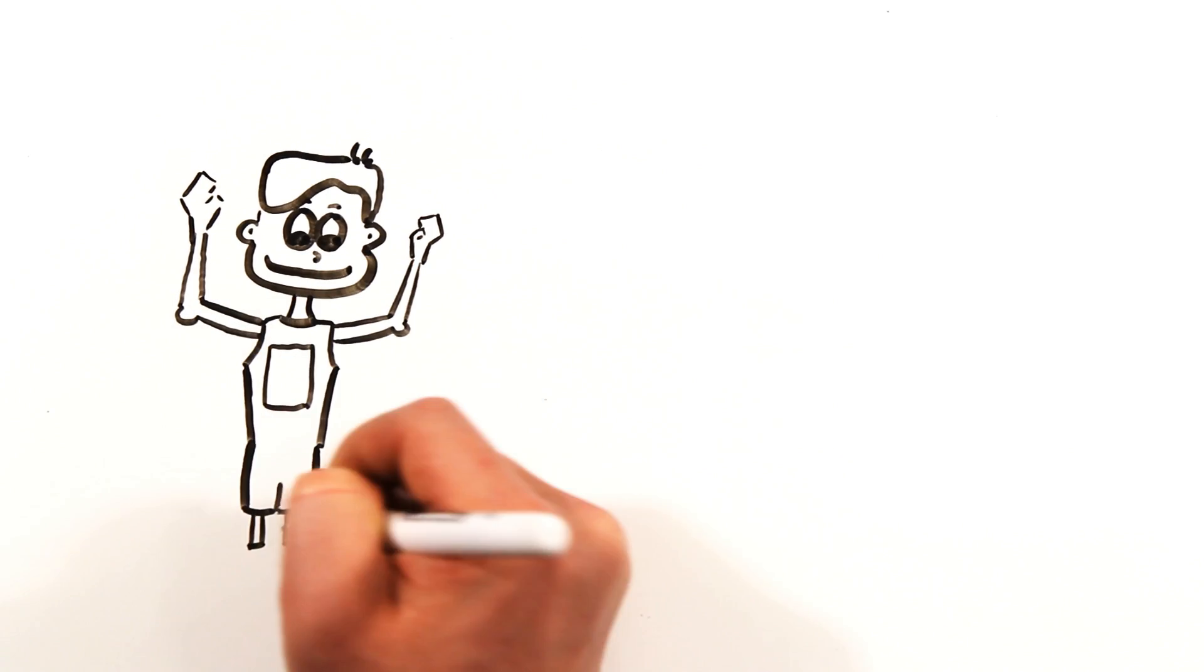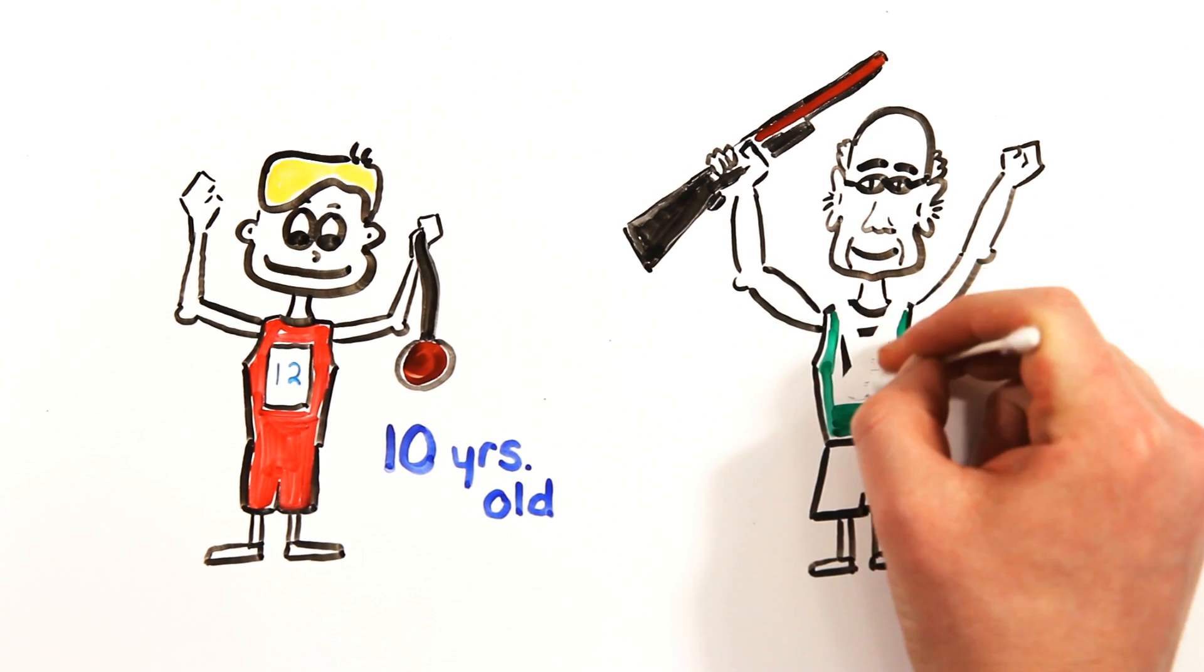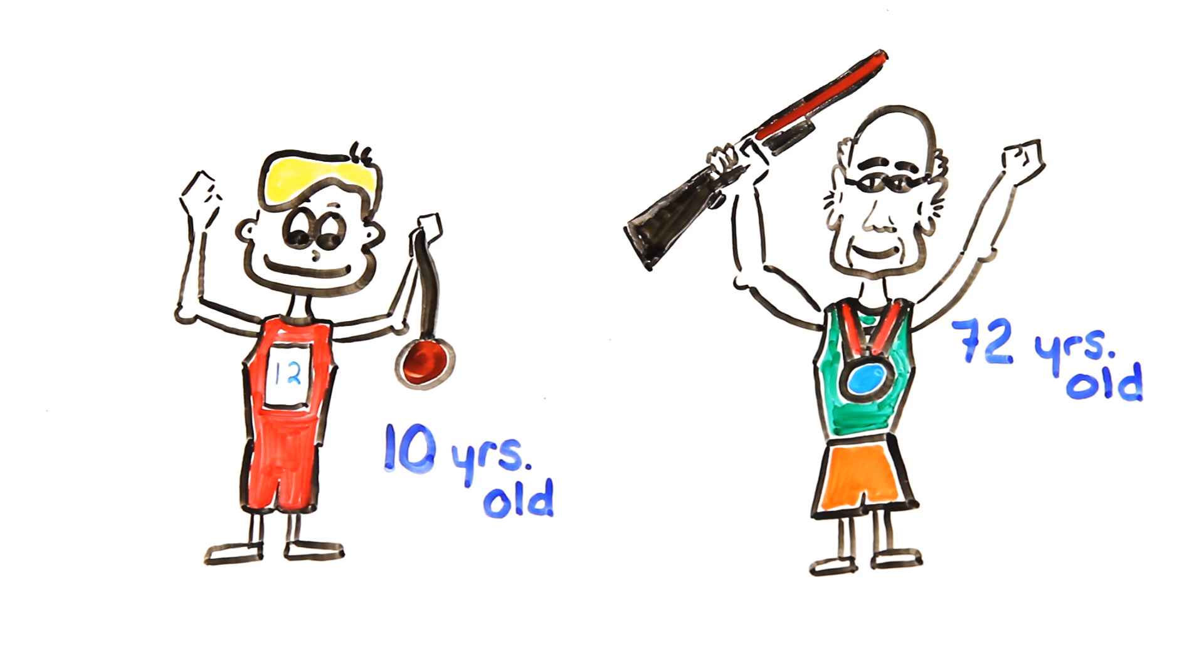Though, as the Olympics grows older, some Olympians seem to be getting younger. The youngest ever Olympic medal winner was Dimitrios Lundras, who was awarded a bronze medal in gymnastics at the age of 10. On the other hand, the oldest Olympic medal winner was Oscar Swan, who won an Olympic silver medal in shooting at the age of 72.